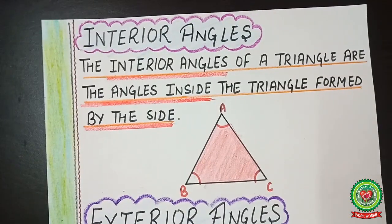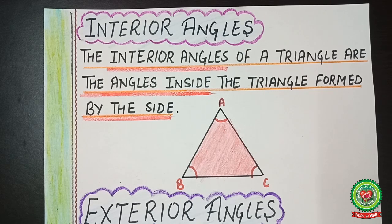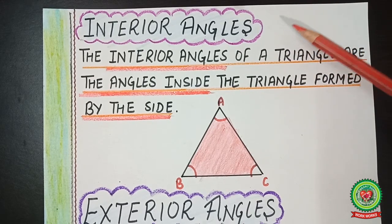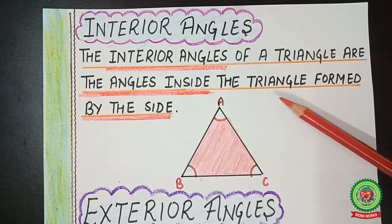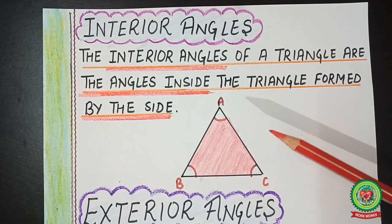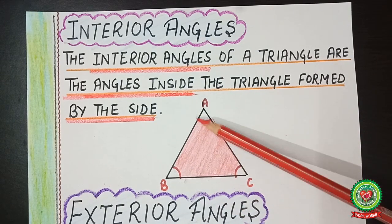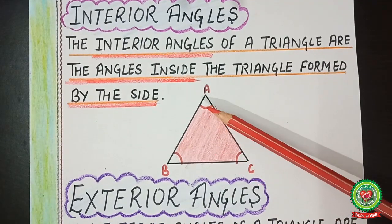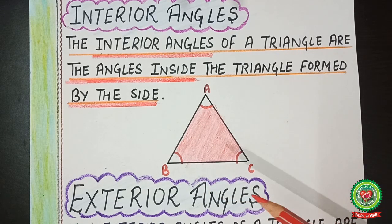Before starting our topic, we will learn about interior angles. We have already learned about this term in our junior classes about interior or exterior points of a figure. Now here we will talk about interior angles of a triangle. The interior angles of a triangle are the angles inside the triangle formed by its sides. As you can see in the figure, angles A, B, C are the three interior angles of the triangle.